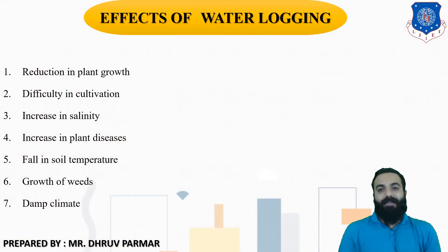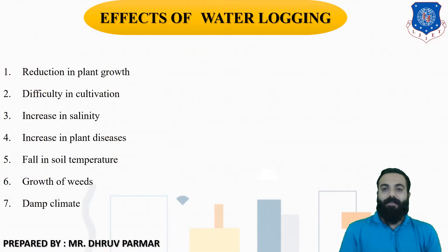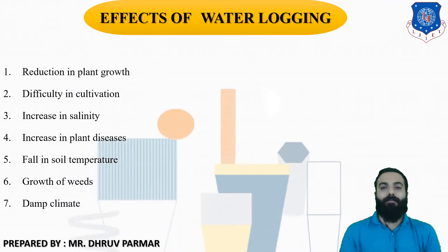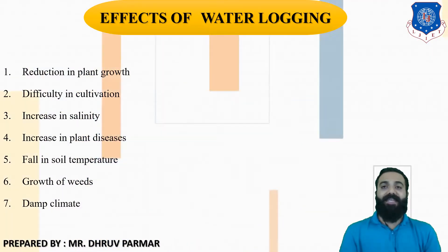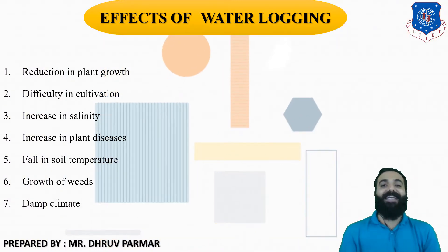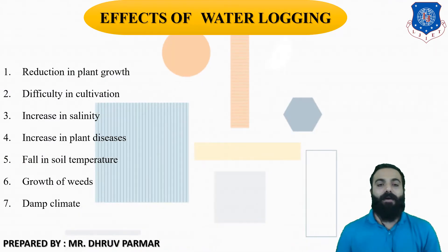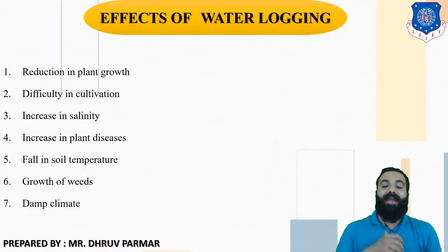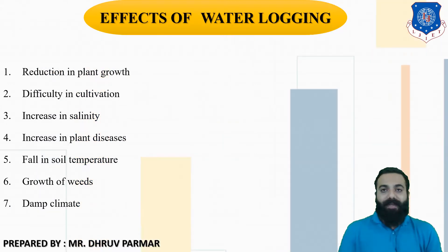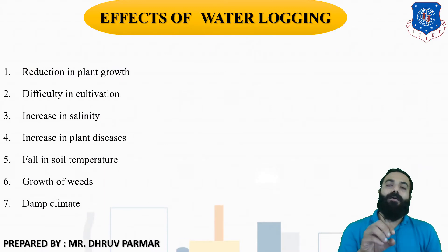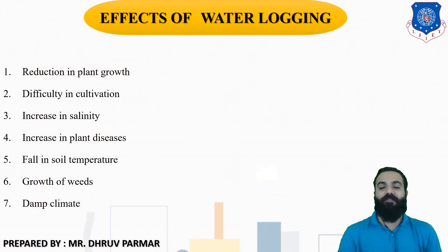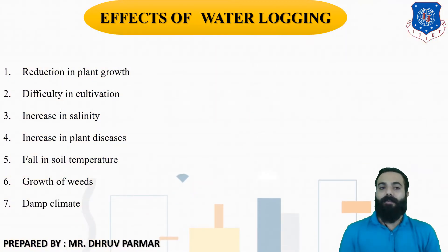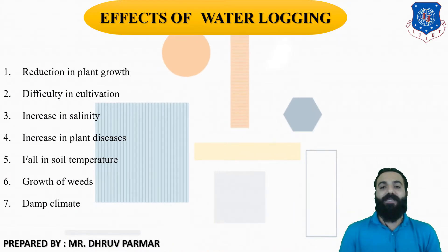The second effect is difficulty in cultivation. When an area is waterlogged, cultivation or harvesting of products becomes difficult due to water storage. The third effect is increase in salinity — water sometimes contains some amount of salt. When waterlogging occurs, the water evaporates and the salt remains on the surface of the land, increasing the salinity level of that land. The fourth effect is plant disease, including mosquito nuisance and various plant diseases that increase due to waterlogging.